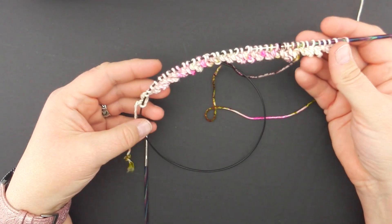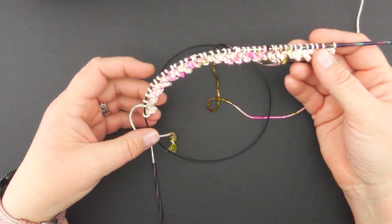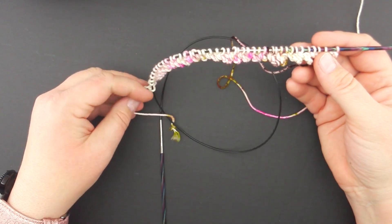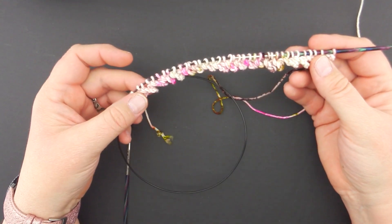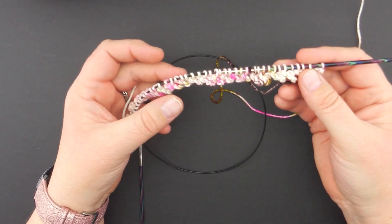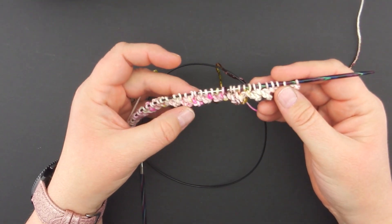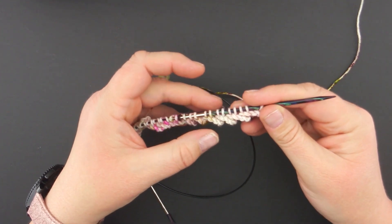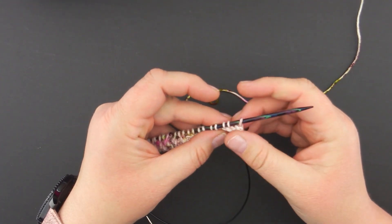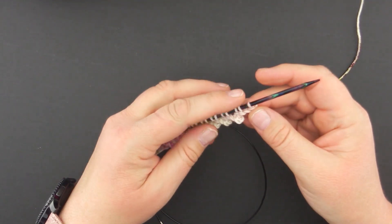So I've cast on all of the stitches for our first cuff. There are 42 stitches here and there are 21 picots, and two stitches on each picot.